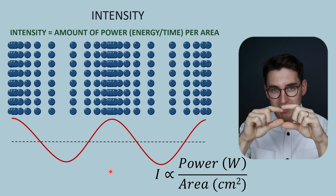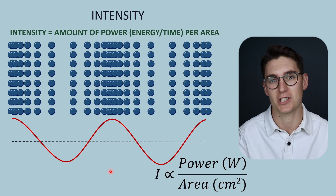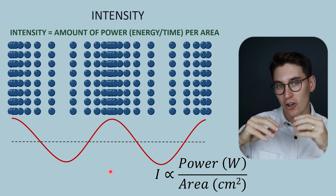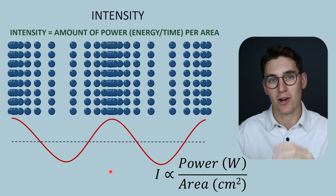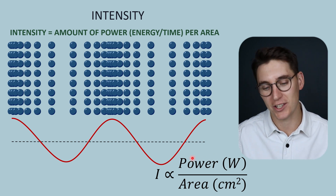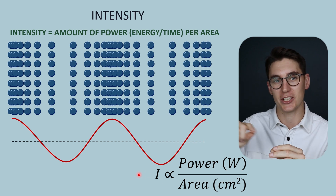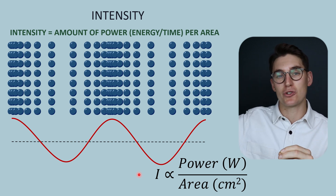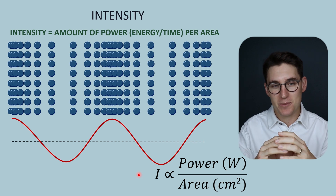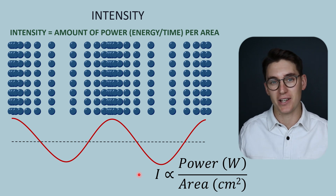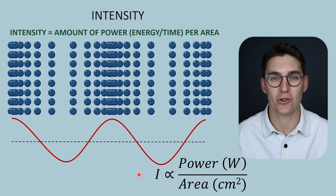If we think of our ultrasound probe, it covers a set amount of real estate — it has a certain area. Intensity is the measure of power put into the tissues over the area that power is being released. As power increases, intensity increases, so intensity is also related to pressure changes and the amplitude of our wave. As amplitude doubles, intensity quadruples if area remains the same. Spreading ultrasound power over a larger area decreases intensity; a smaller area increases it.